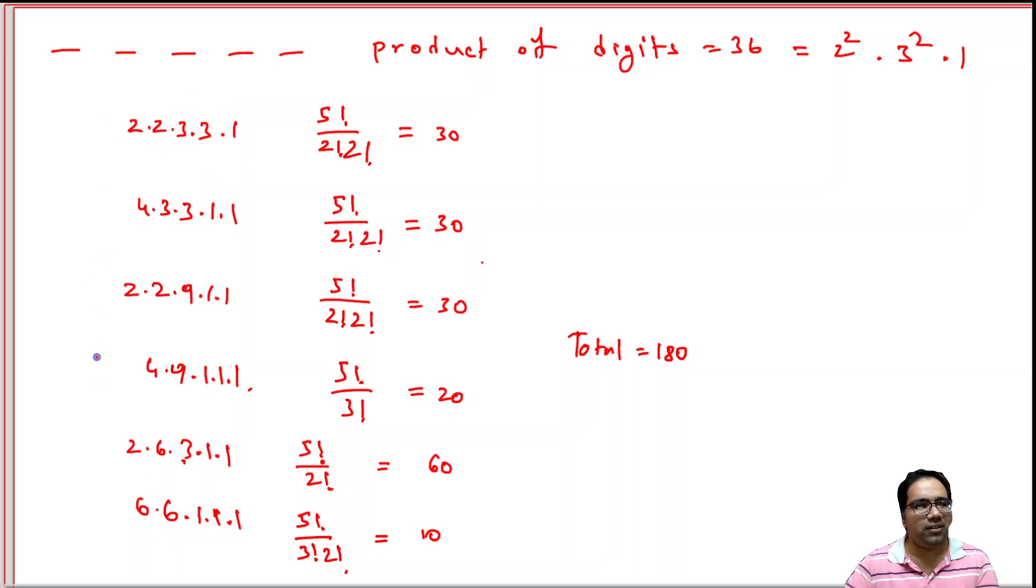Now, with this combination, we can create how many numbers? Basically, we have 5 numbers, 5 digits, and 2 of them are repeating and 2 of them are repeating. That means 5! / (2! × 2!). All the numbers that we can create using this combination.